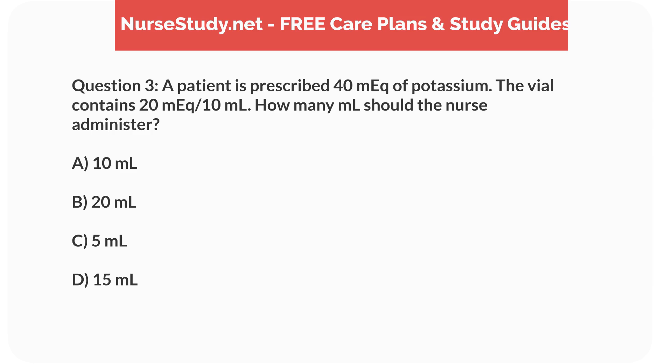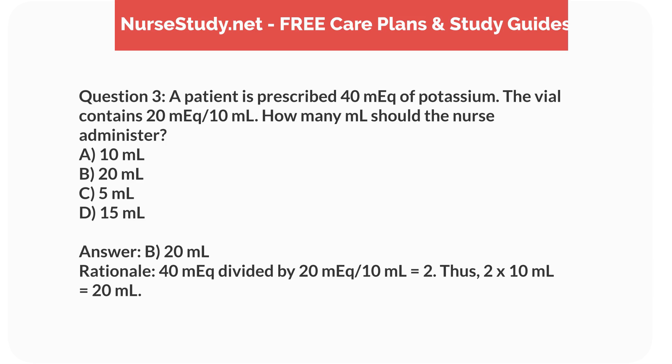Question 3. A patient is prescribed 40mEq of potassium. The vial contains 20mEq per 10mL. How many mL should the nurse administer? a. 10mL, b. 20mL, c. 5mL, d. 15mL. Answer: b. 20mL. Rationale: 40mEq divided by 20mEq per 10mL equals 2. Thus, 2 times 10mL equals 20mL.